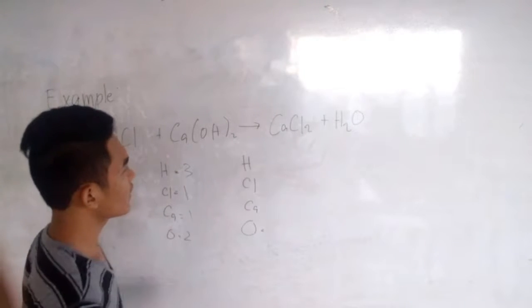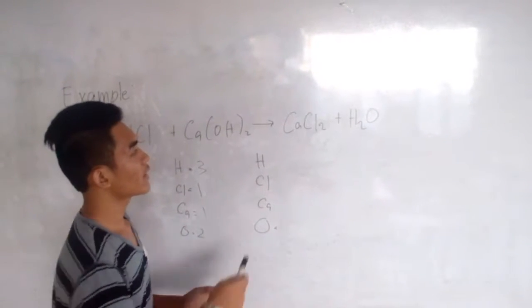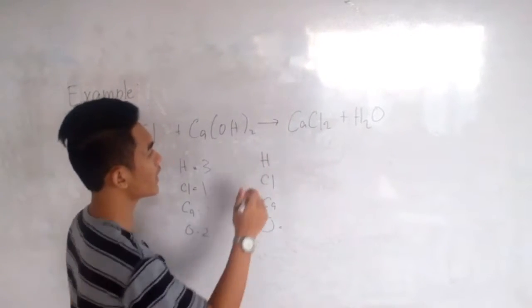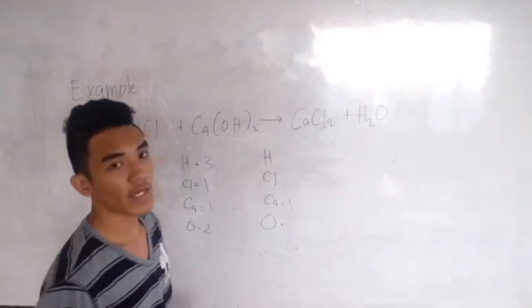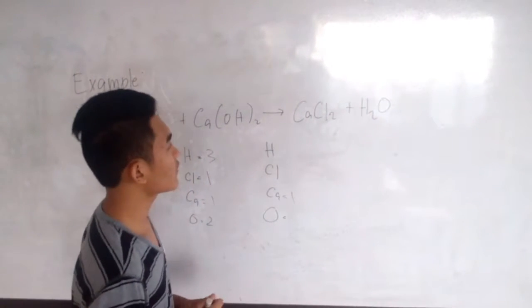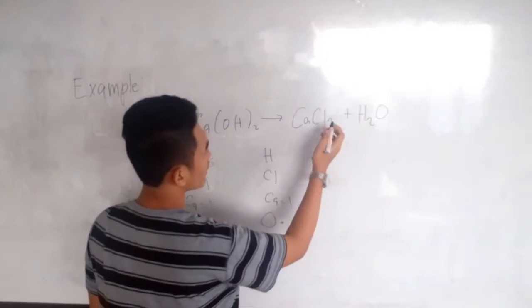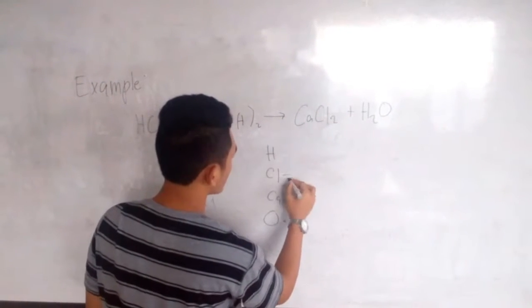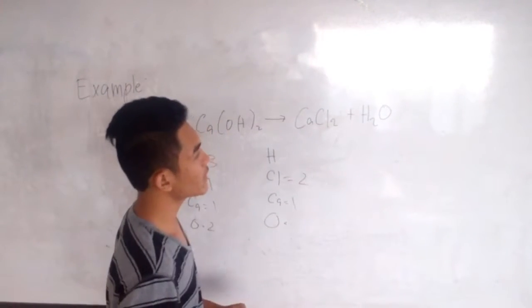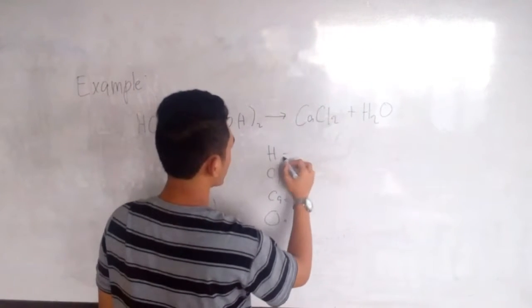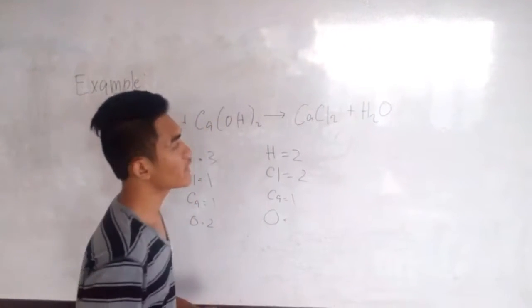Then on the other side is the calcium. Calcium here is 1. You write 1. Then the other side, the other is chlorine. Chlorine here is 2. You write 2. Then hydrogen. Hydrogen here is 2. You write 2. Oxygen is 1.